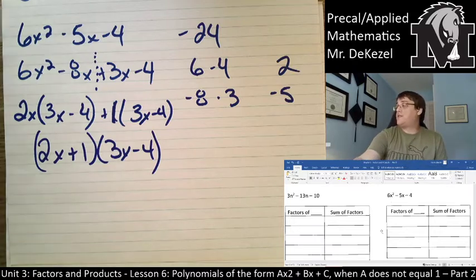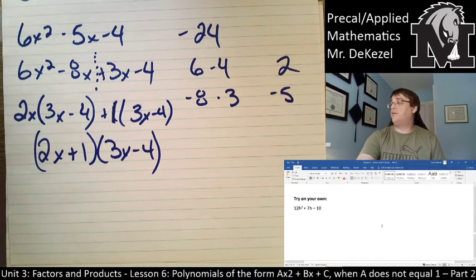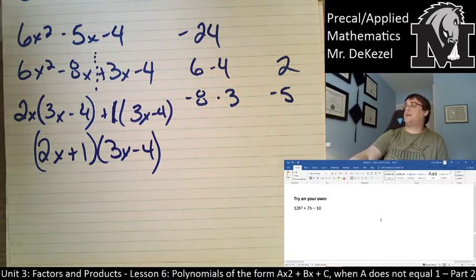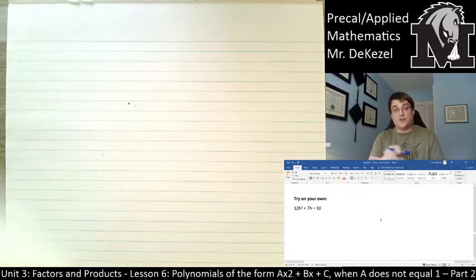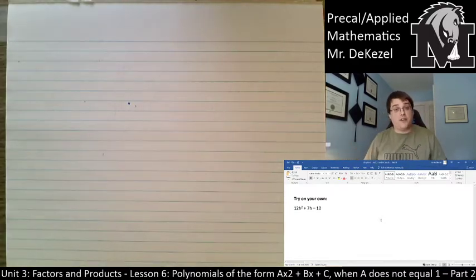There is now some for you to try on your own. 12h squared plus 7h minus 10. So, do that and come back and we'll see if you got it right.